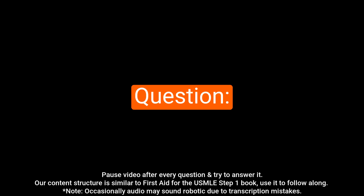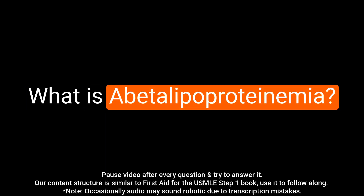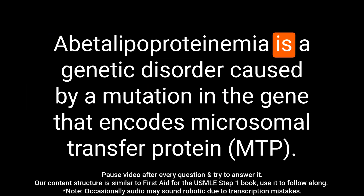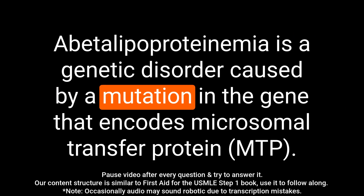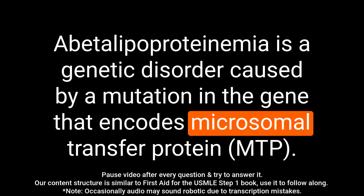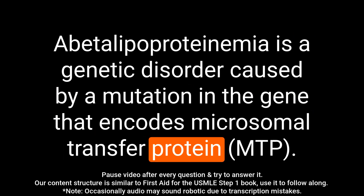This is USMLE QA, USMLE material presented in a question and answer format structured similar to the First Aid for the USMLE Step 1 book. Question: What is abetalipoproteinemia? Answer: Abetalipoproteinemia is a genetic disorder caused by a mutation in the gene that encodes microsomal transfer protein.